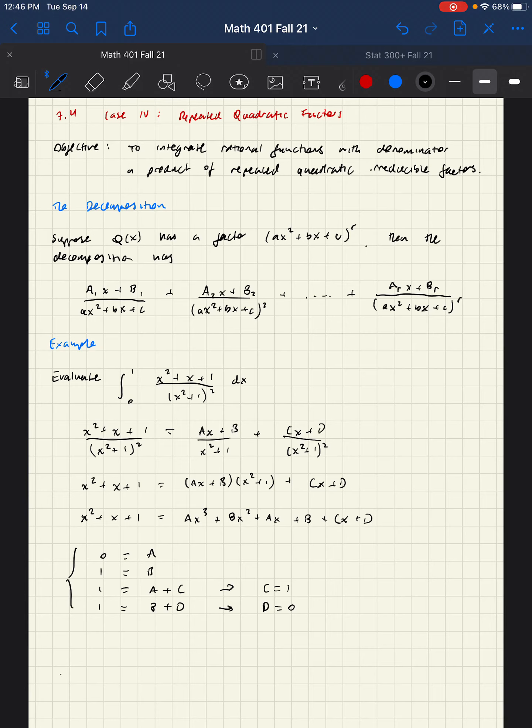Then let's go ahead and split this up. So we have the integral from zero to one of x squared plus x plus one over x squared plus one squared, which is going to be the integral from zero to one of the a is nothing so we just get the b there, so one over x squared plus one plus x over x squared plus one squared dx.